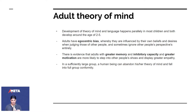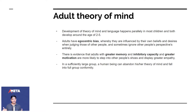Four is when most children can pass the Sally-Annie test. Adults have egocentric bias, whereby they're influenced by their own beliefs and desires when judging those of other people, and sometimes ignore other people's perspectives entirely.